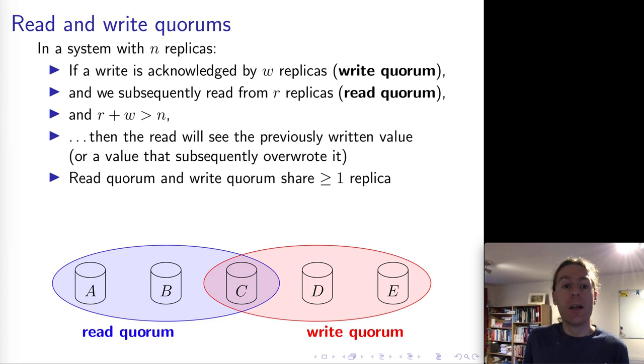So the idea here is that the write goes to some subset of nodes, the read goes to some subset of nodes, and we want those two subsets to overlap. And we can guarantee that they will overlap in at least one replica if we have this R plus W greater than N, this quorum condition.